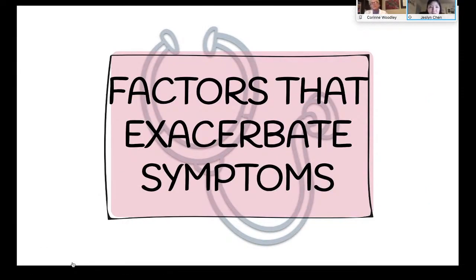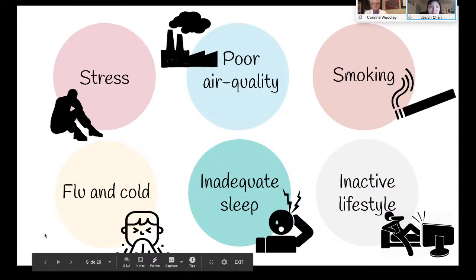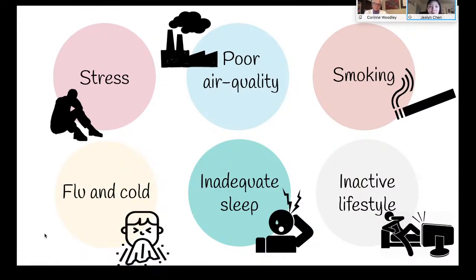Although COPD is a progressive disease, it is very manageable by changing habits and your environment. Factors to be aware of include stress, poor air quality, smoking, flu and cold, inadequate sleep, and an inactive lifestyle. Long-term exposure to stress hormones can decrease the effectiveness of your immune system, making it easier to get respiratory infections. Managing your stress is important to living a healthy lifestyle, and a study found that life event stress affected COPD patients more compared to non-COPD individuals.